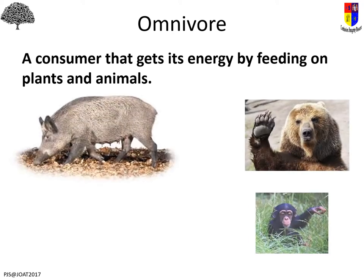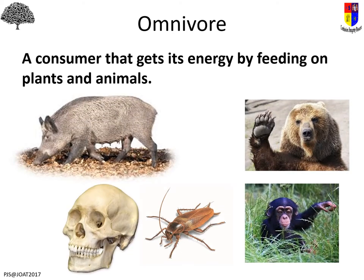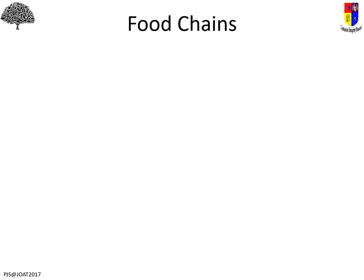An omnivore — 'omni' meaning everything — gets its energy by feeding on both plants and animals. If you look at the human skull compared to a carnivore skull, we do have slightly pointy teeth, but only slightly. Compared to a herbivore skull, which has a huge number of grinding teeth, we still have those at the back but they're smaller. So we're non-specialists but able to do both — kind of like everything.